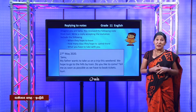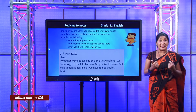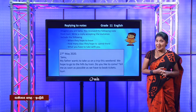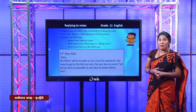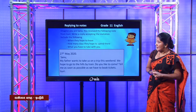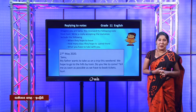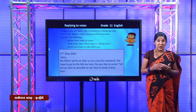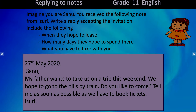You are Sanu and you must accept the invitation. Before that, they have also asked certain things from you in the guidelines: when they hope to leave, how many days they hope to spend there, and what you have to take with you. There are three important things you are going to ask. After you accept, remember the date, the receiver's name, please thank, then accept the invitation, and then think about the three guidelines given.